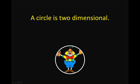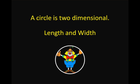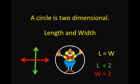A circle is also two-dimensional. It has length and width. If we draw the length, it's always going to be the same. If we measure the length, it's always going to be the same as the width. So if our length is two, our width will also be two. They're always the same.